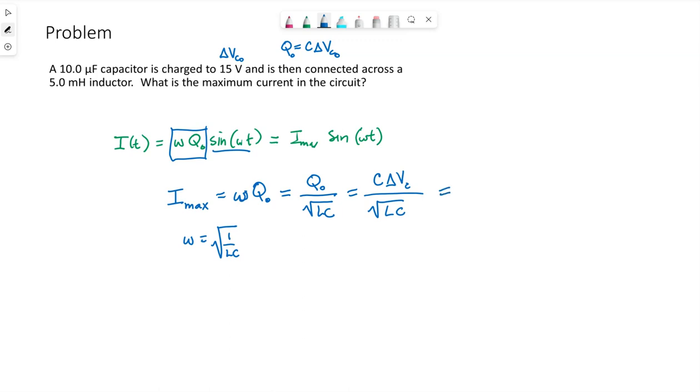This will give us the maximum current that ends up flowing. Our capacitor value is 10 microfarads, so 10 times 10 to the negative 6. The voltage this capacitor is charged to is 15 volts.